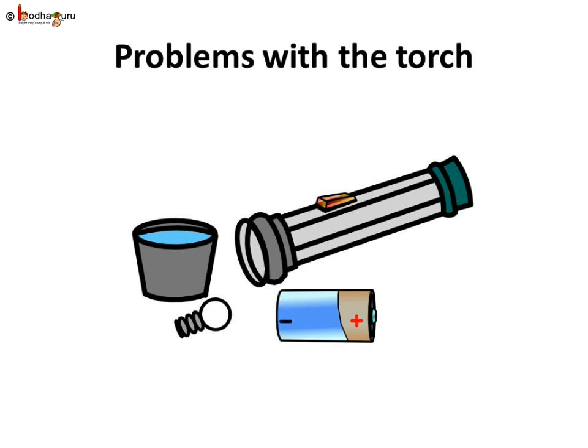At times, even if all the connections are right and the cells are placed correctly, the torch may not work. If the torch is not working, there can be some other problems too, like a cut wire inside the torch, no chemical left in the cell to produce electricity or damaged bulb. After knowing how the torch functions, it will be easier for you to figure out where is the problem and you should be able to fix it easily.